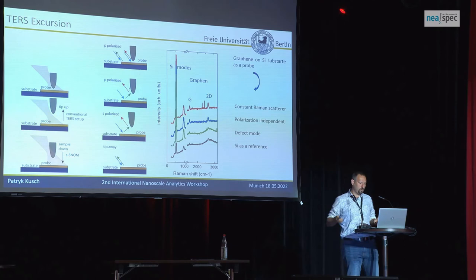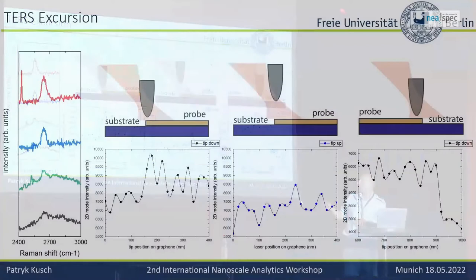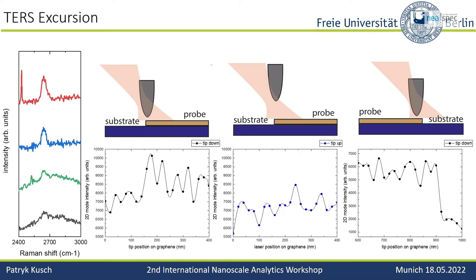Still, doing all this to confirm tip-enhanced Raman tells me nothing definitively — it's a first proof only. The ultimate proof is scanning an edge: when you scan it finely enough, you should see the edge in the Raman spectra when you plot the intensity of the peak. We plot the 2D peak intensity of graphene as a function of tip position as we scan toward the edge.